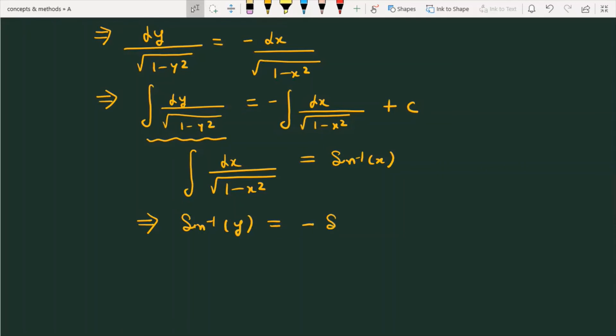Right side may have checked. This is minus sin⁻¹(x) + constant. Or we can write sin⁻¹(y) + sin⁻¹(x) = c, which is the solution for the given differential equation.